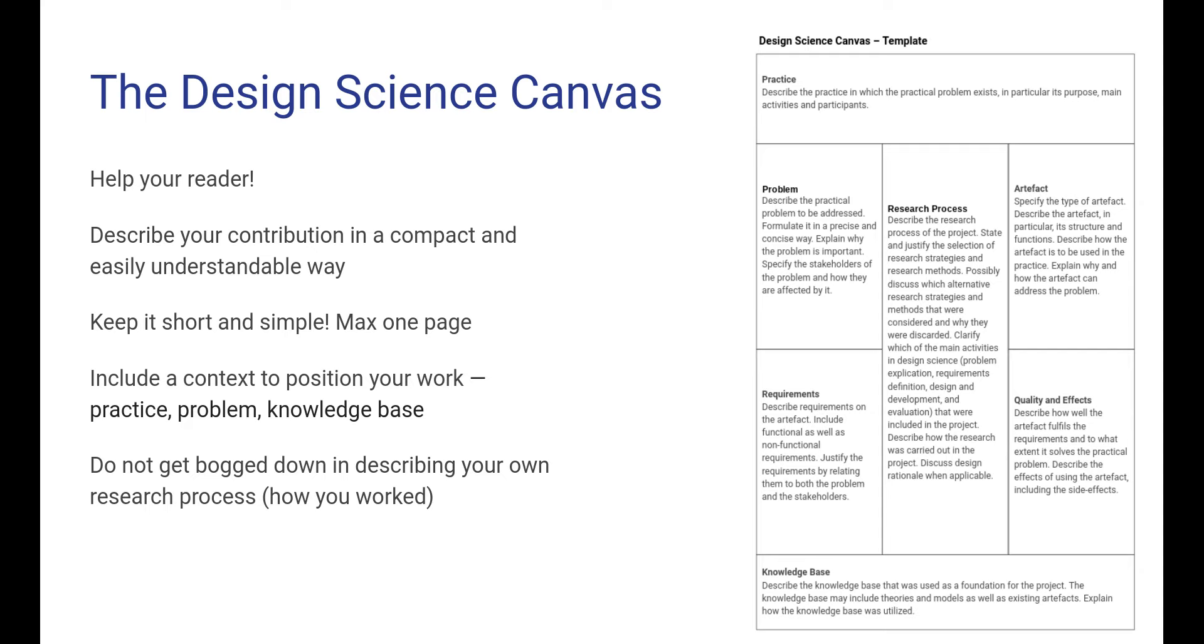And in this way, you also include a context to position your work, which is easy to forget. Sometimes you get carried away with the particular structure of your artifact. But for the reader to understand, you need to also talk about the practice and the problem and the knowledge base used. And furthermore, the canvas helps you not to get bogged down in describing your own research process. It's easy that you start to write some kind of diary that you tell exactly what you have done day by day, how your research process has worked out. But this is often not very interesting for the reader. The reader instead needs to know about the stuff you have in the canvas.